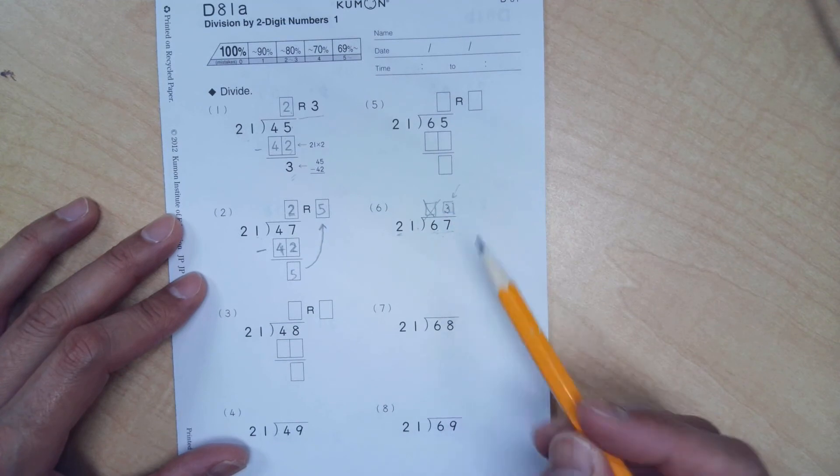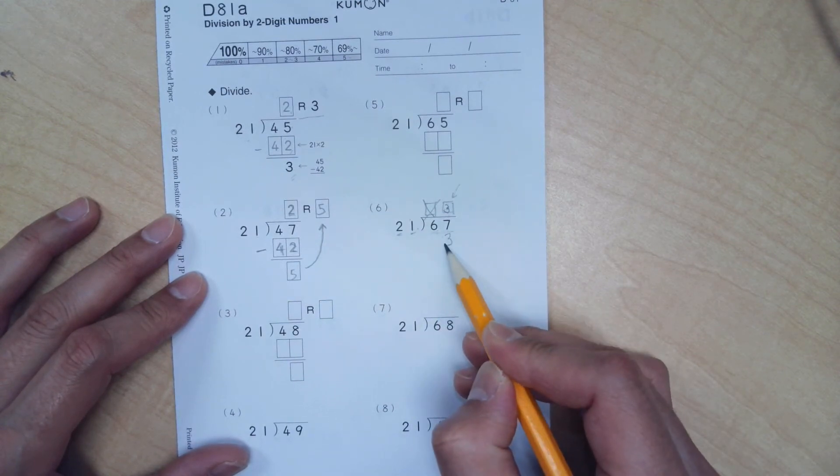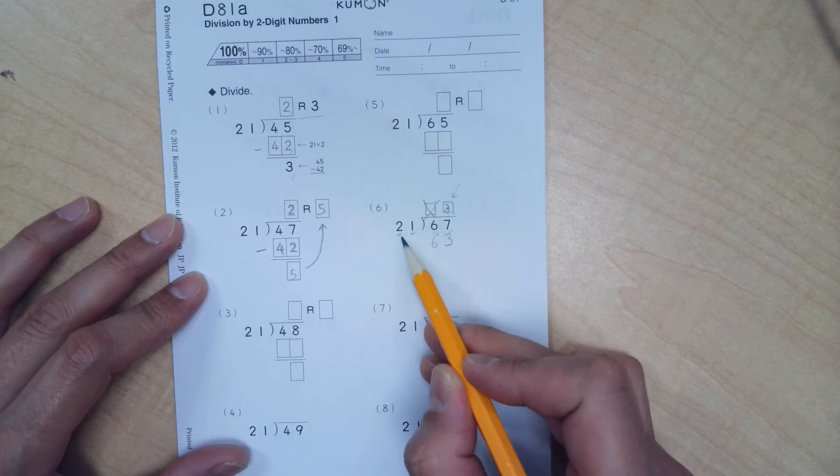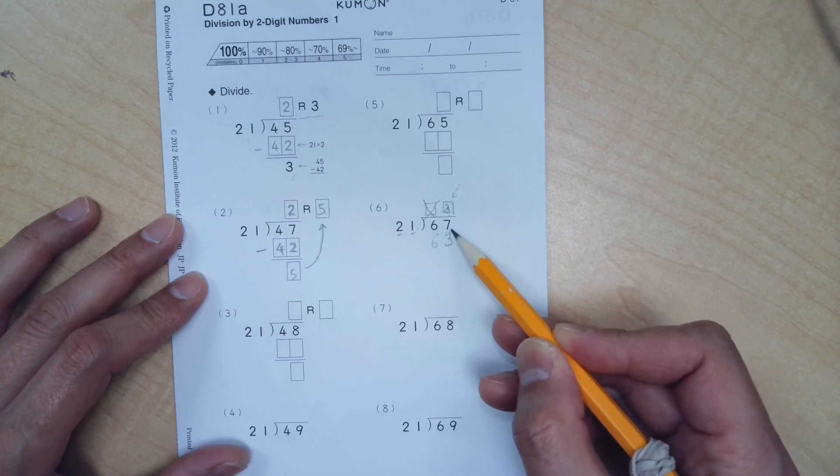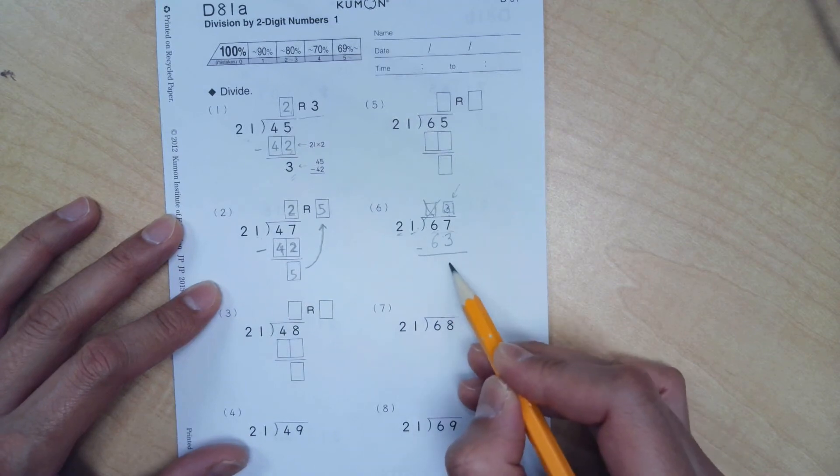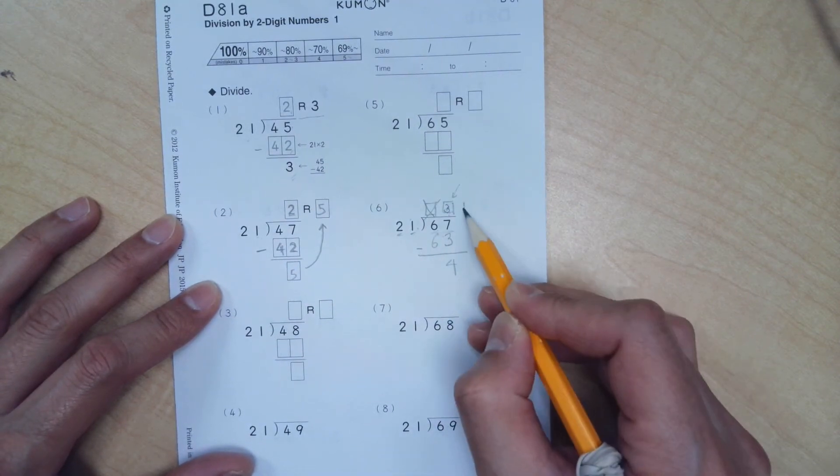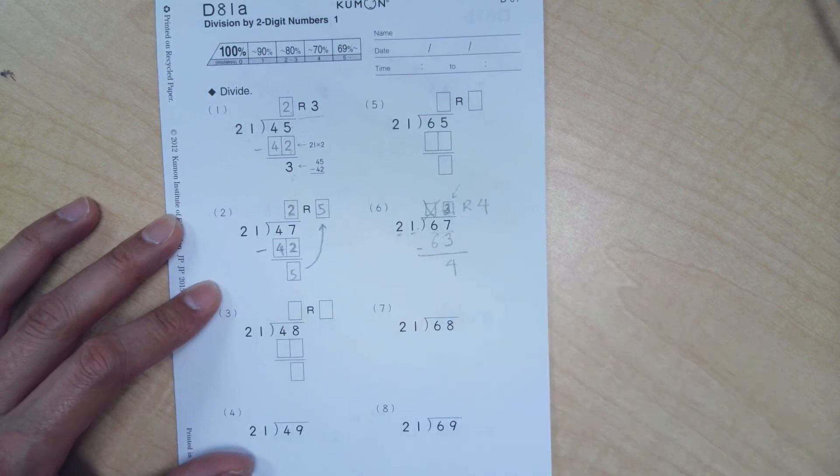1 times 3 is 3. 2 times 3 is 6. So 21 times 3 is 63, which is really close to 67, but it stays below it, which is what we want. And when we do our subtractions, we got 67 minus 63, which is 4. And so your remainder would be 4. So the answer is 3 remainder 4.